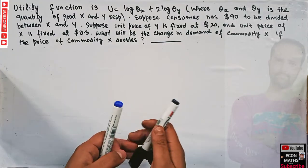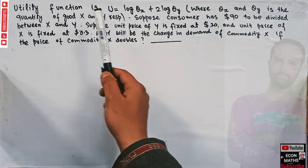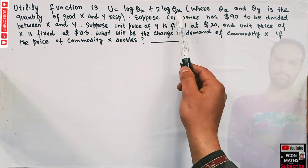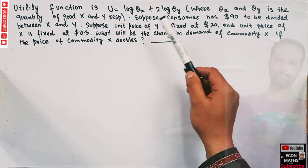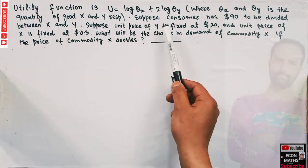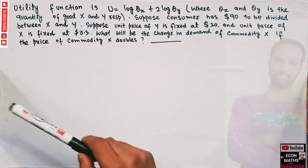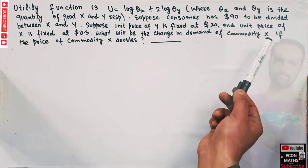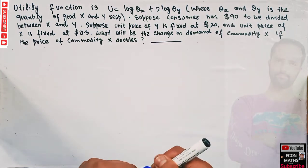In this video we will try to solve a problem from the Telegram channel of economics. The utility function is given as U = log(Qx) + 2·log(Qy), where Qx and Qy are the quantities of goods X and Y respectively. The consumer has a total income of 90 dollars, the unit price of good Y is fixed at 20 dollars, and the unit price of good X is fixed at 0.3 dollars. We need to find the change in demand for commodity X if its price doubles.